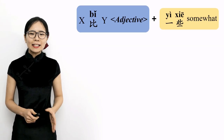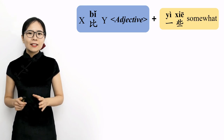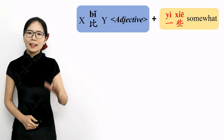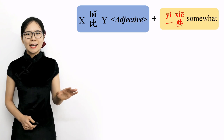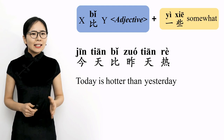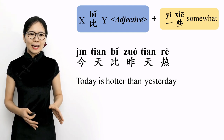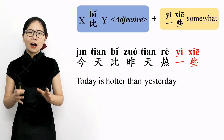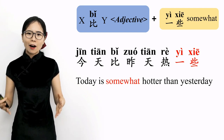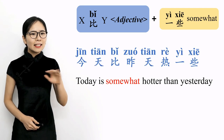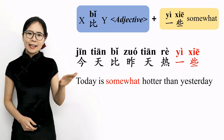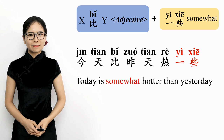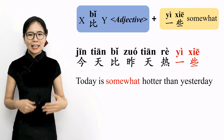The second qualifier is 一些, meaning 'somewhat.' 一些 is used to say there is more than a little difference, but it's not a large difference. Please repeat after me: 一些, 一些, 一些 — somewhat. 今天比昨天热 means 'today is hotter than yesterday.' By adding the qualifier 一些 after the adjective 热, we can say 'today is somewhat hotter than yesterday.' Please repeat after me: 今天比昨天热一些. 今天比昨天热一些 — today is somewhat hotter than yesterday.